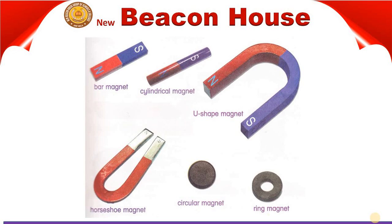You can see on your slide there are different types of magnet. First is bar magnet. Second, cylindrical magnet. Third, U-shaped magnet. And washer magnet, circular magnet and ring magnet. These are all different kinds of magnet that we are going to discuss.